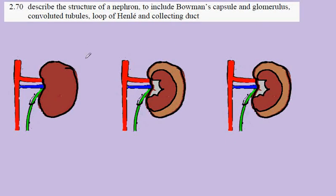IGCSE Biology, syllabus statement 270. Here we're looking to describe the structure of the nephron, which is the functional unit of the kidney — the part that does the filtration and the controlling of the composition of blood.